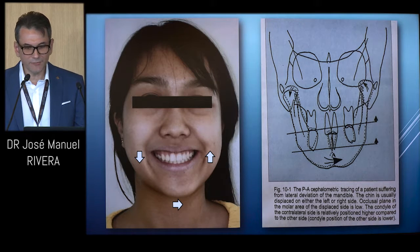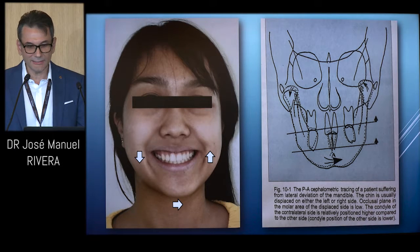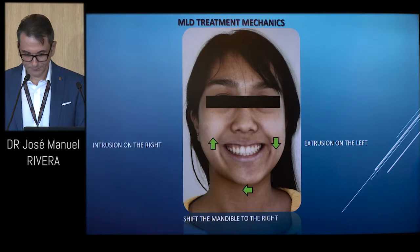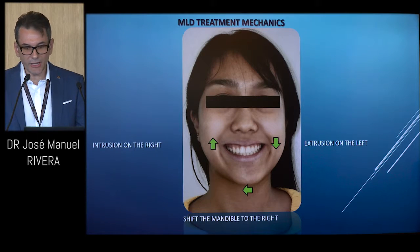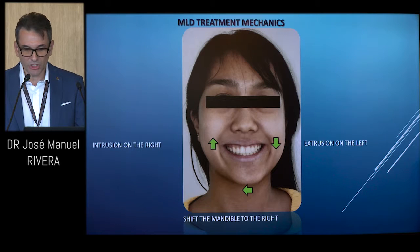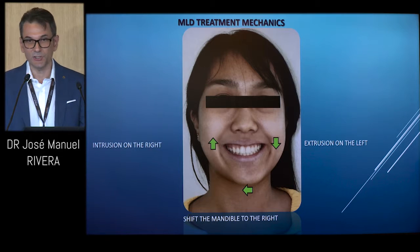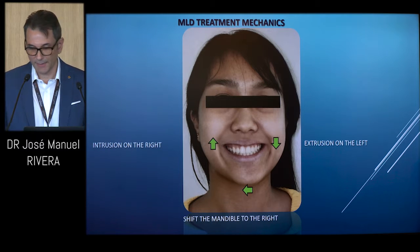The canting of the occlusal plane in MLD also causes a disproportion in the gum line when smiling. Our treatment objective is therefore to reposition the shifted mandible to correct the canting and the gum line by doing intrusion and extrusion mechanics.